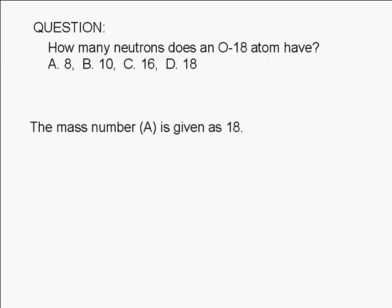We're given that the mass number is 18. The mass number, which is often represented by the letter A, is the total number of neutrons and protons.